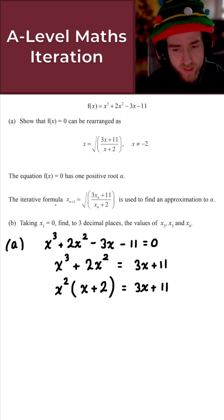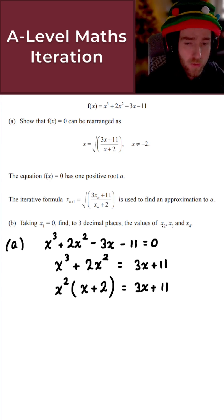Once we do that, what we obtain is x squared bracket x plus 2 equals 3x plus 11. And this is promising because they have x plus 2 as the denominator here. So next step, let's just divide both sides by x plus 2 here.